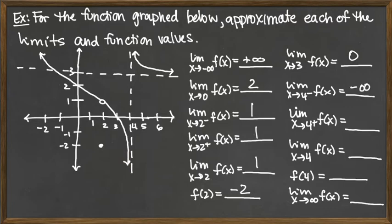For the right-hand side of 4, we look at x values slightly bigger than 4. That highlighted arrow shows the function increases and goes up without bound. So the limit from the right is positive infinity.